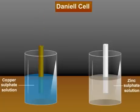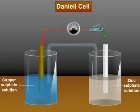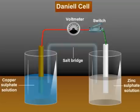Now let's connect the two rods using wires. And we also put a switch and a voltmeter. The two solutions are also connected using a salt bridge which has an inert electrolyte, for example potassium nitrate.